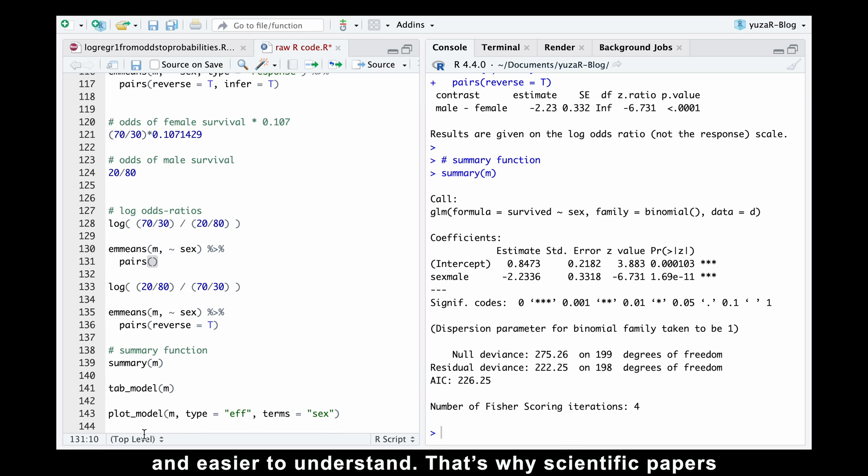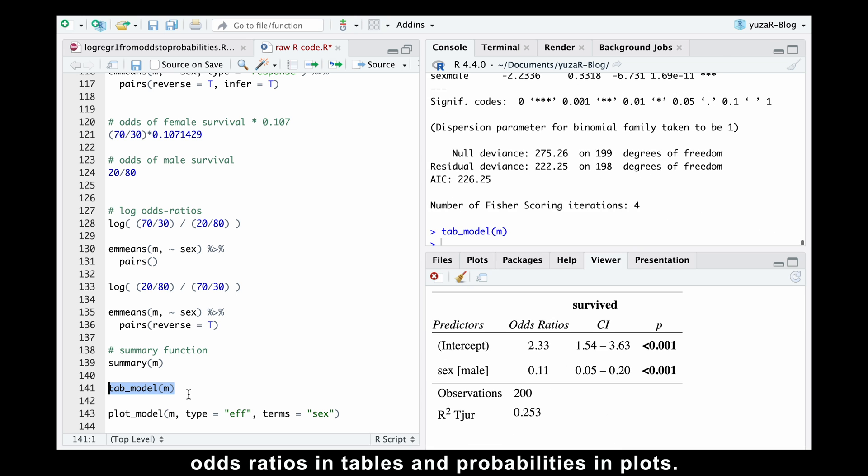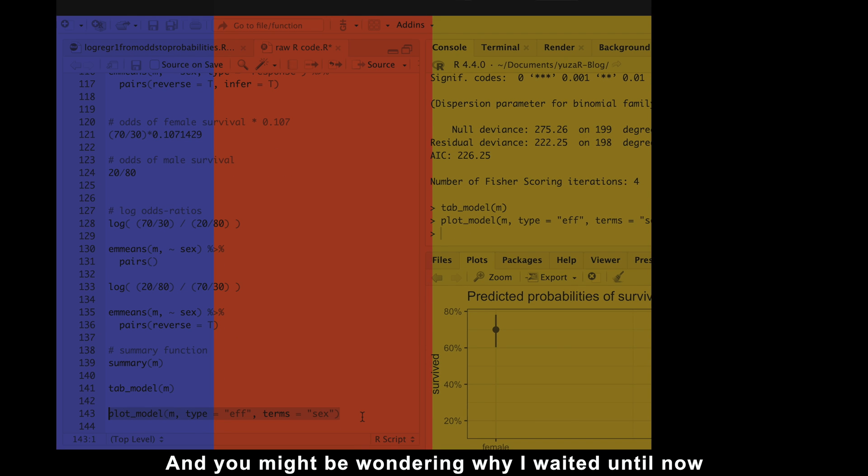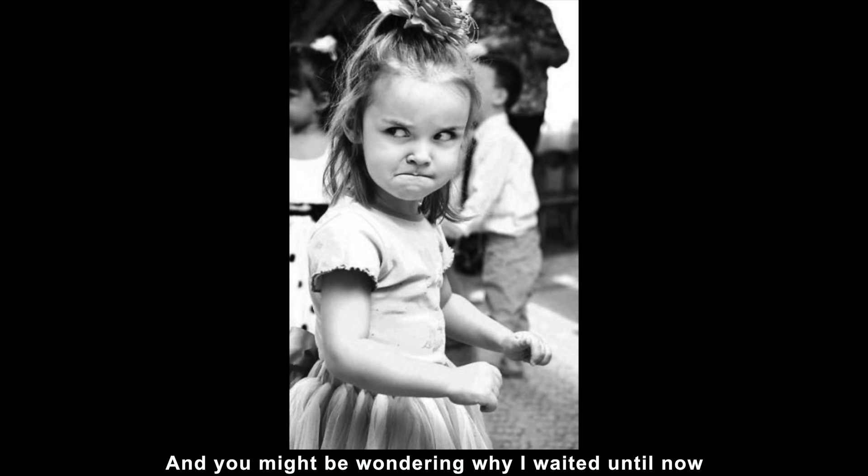That's why scientific papers report logistic regression results in two ways: odds ratios in tables and probabilities in plots. And you might be wondering why I waited until now to use this summary function.